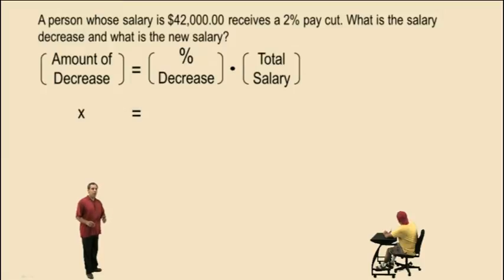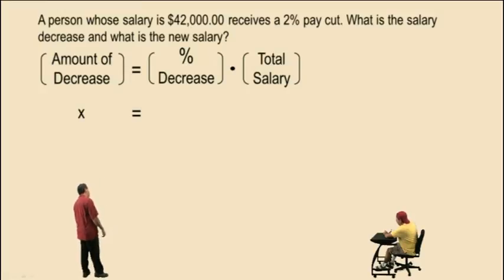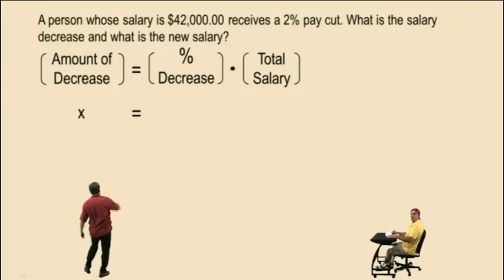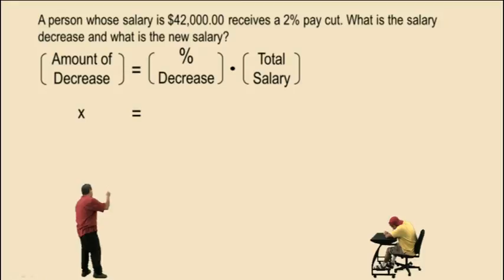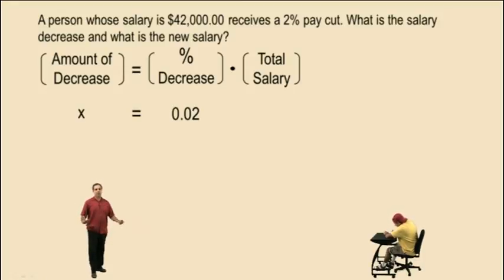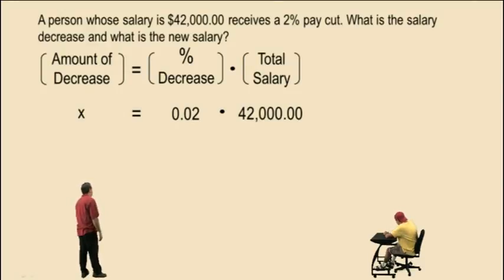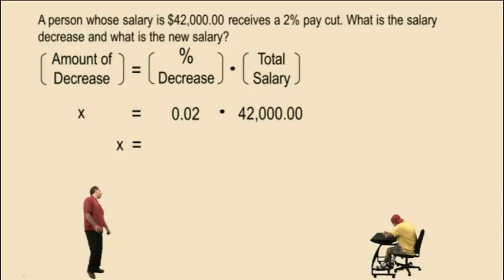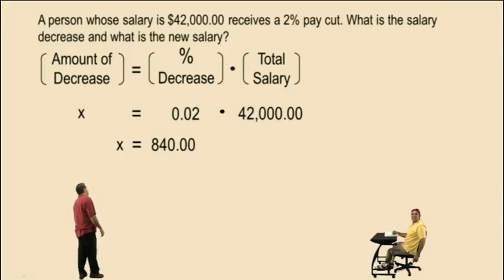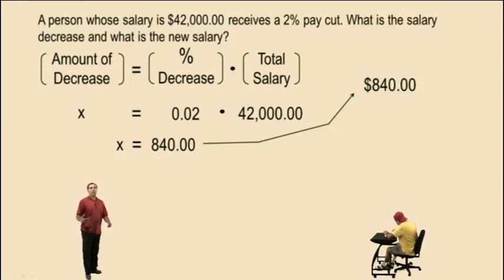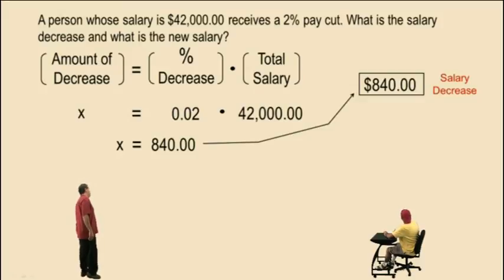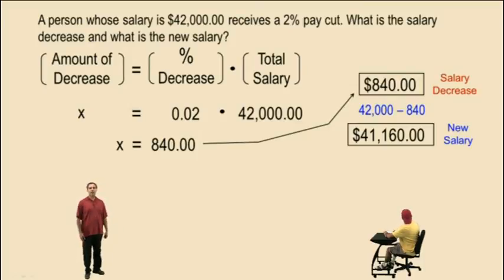The percent decrease is 2%. Remember, in the equation we don't put the percentage value — we put its decimal representation. To convert a percent to a decimal, we move the decimal two places to the left. So 2% as a decimal is 0.02, which is 2 hundredths. The total salary is $42,000. To calculate the amount of decrease, multiply 0.02 times $42,000. Charlie, what did you get? $840 — very nice. So the amount of decrease is $840. To get the new salary, we take the old salary of $42,000 and subtract $840, giving a new salary of $41,160.